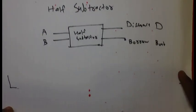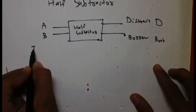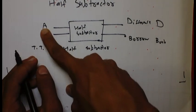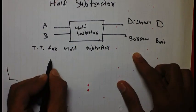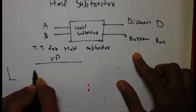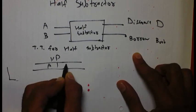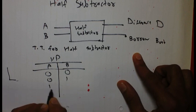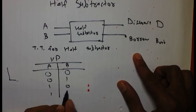So let's make truth table for the half subtractor. As we know we have to take two inputs for truth table, inputs A and B: 0 0, 0 1, 1 0, 1 1.